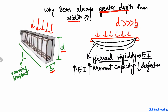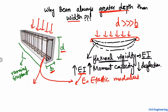In the factor EI, E is the elastic modulus of the material from which the beam is made. If we use the same reinforced concrete material, then E is constant and does not play a role in changing the beam's capacity. The one parameter that affects the capacity is I, which is the moment of inertia — also called the second moment of area.